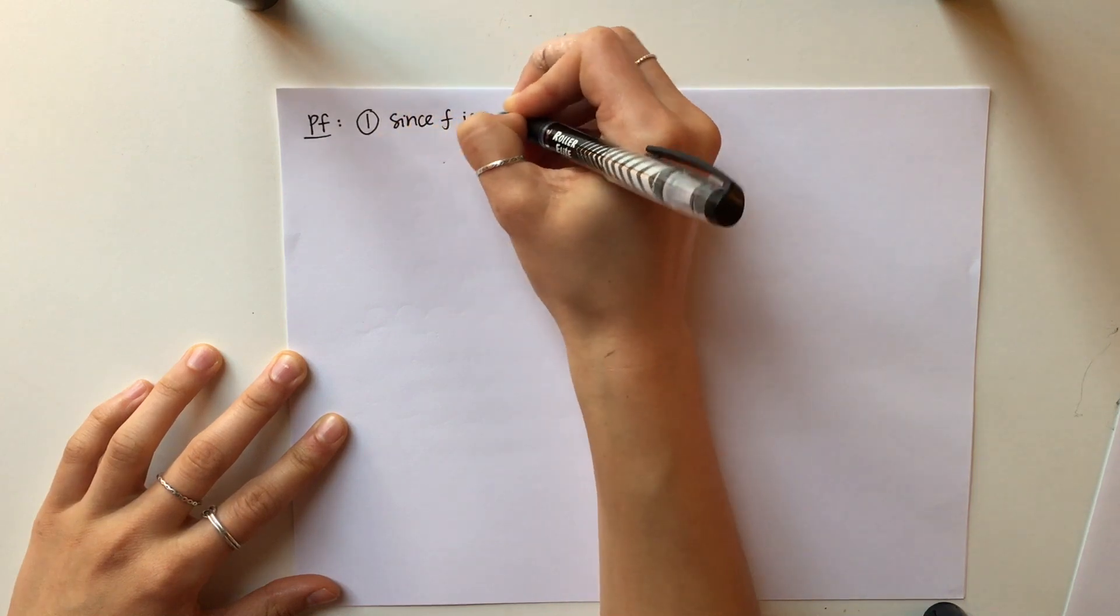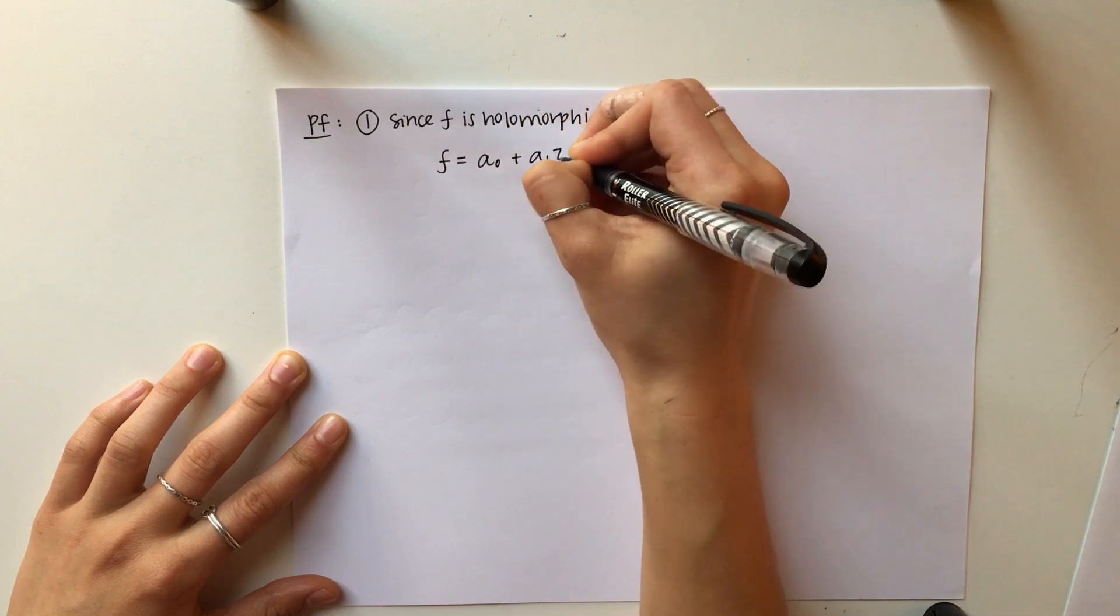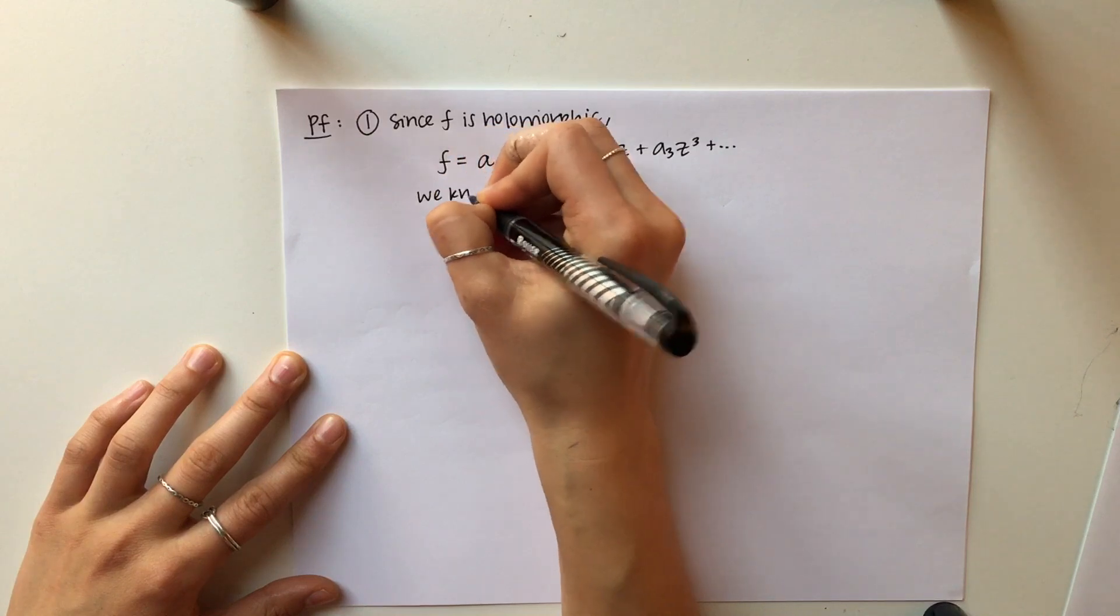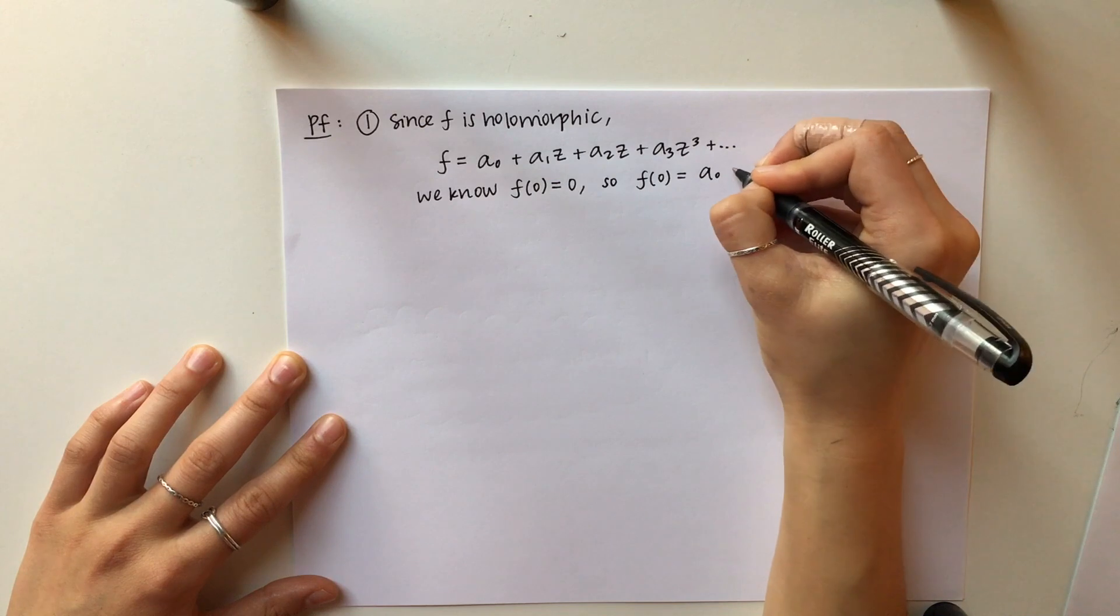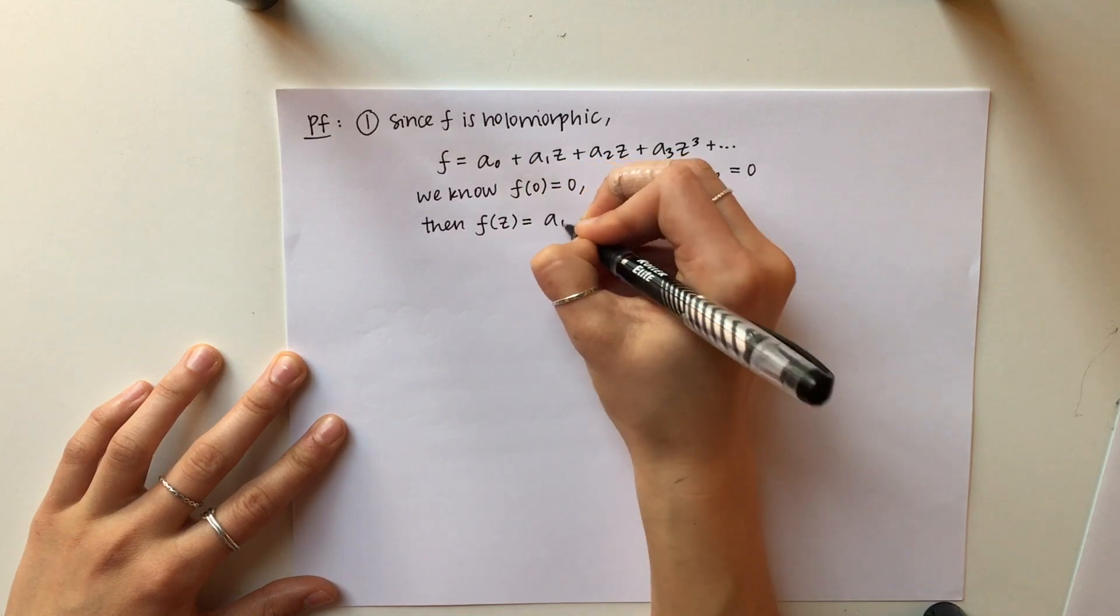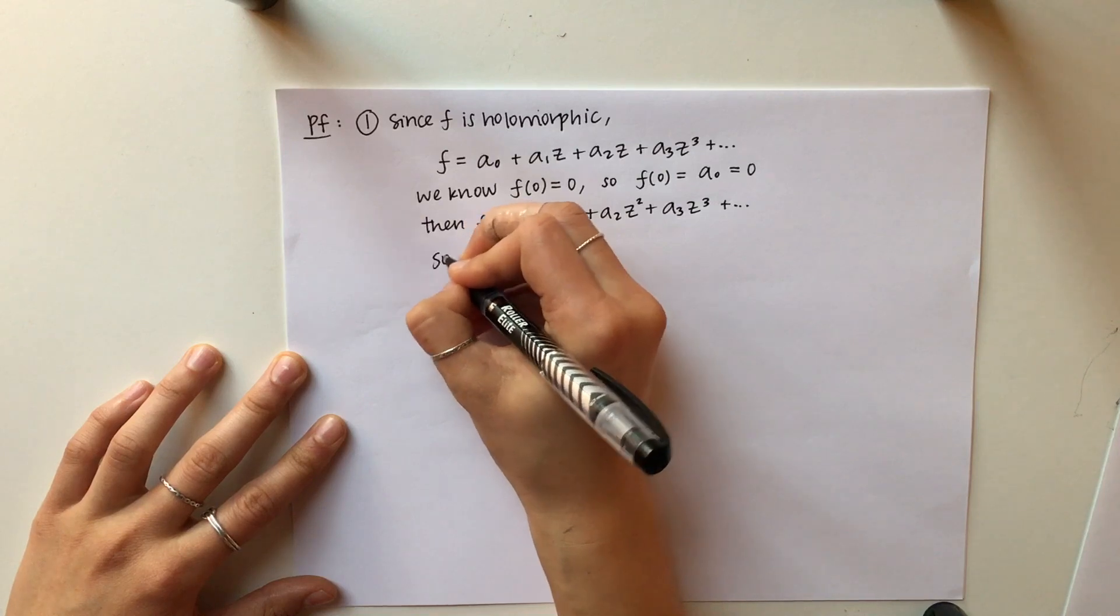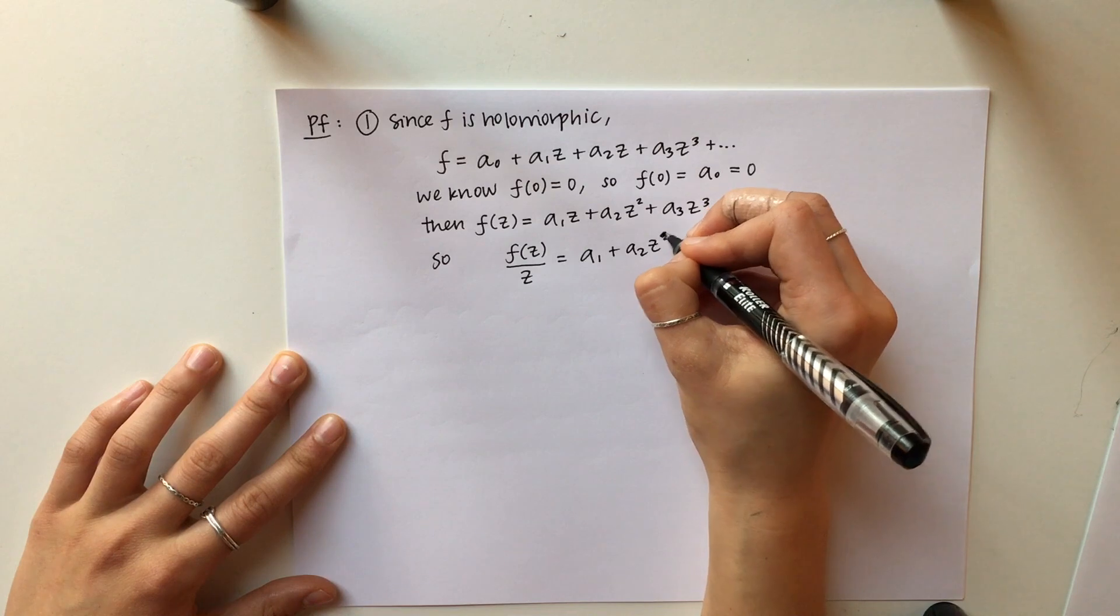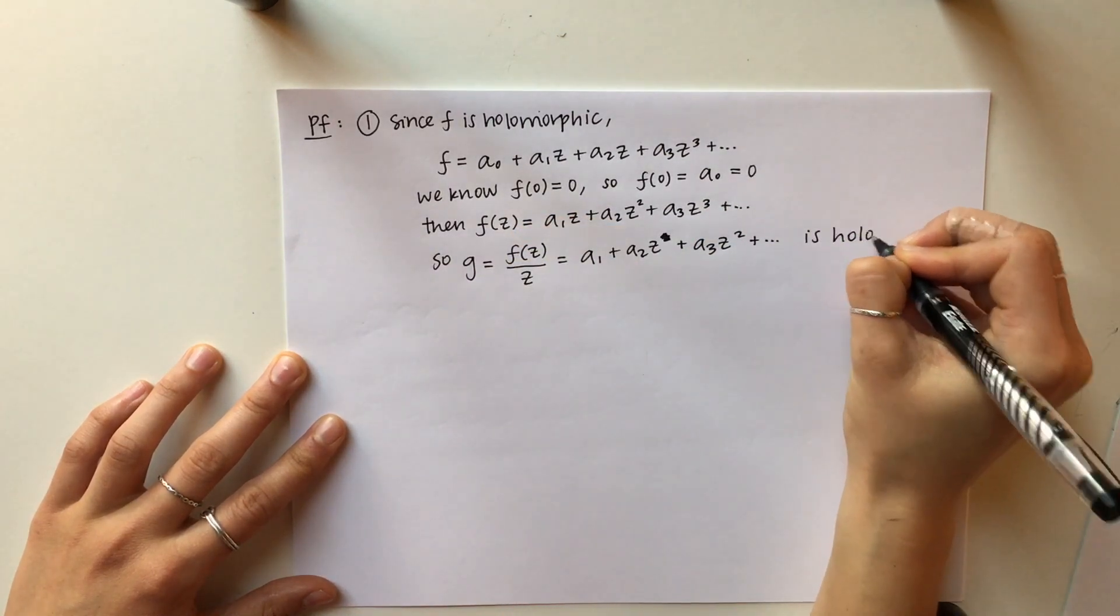Now we will prove this Lemma. The first part we are trying to prove is that F of Z is bounded by modulus of Z. Since F is holomorphic, we can easily write it as a power series expansion centered at zero. Since we know that F of zero equals zero, then plugging that in, we end up with A zero equals zero. So really, F can be written as A1, Z, etc. And if we divide by Z, we can see that we have another holomorphic function since we have another function written as a power series expansion. We will call this function G, and we know it's also holomorphic.